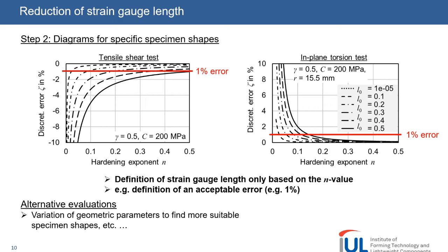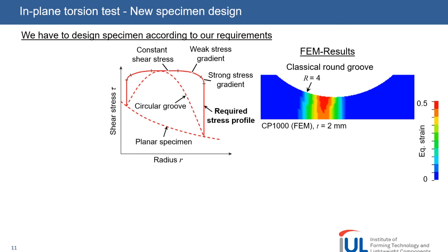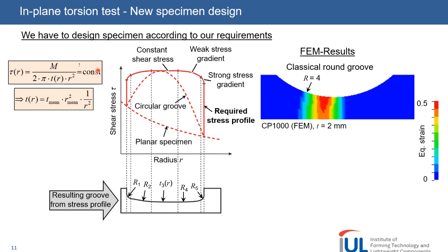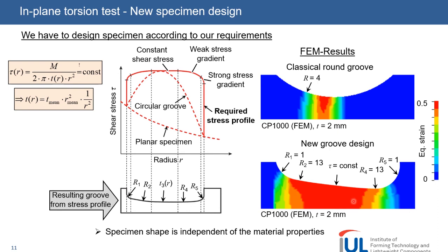This leads us to the second strategy to prevent strain localization. We designed a specimen which shows no strain localization. Conventional grooved in-plane torsion tests show localization at the root of the groove, where stress and strain is maximum as you can see for the CP1000. The new idea is to define the desired stress gradient along the radial position R and construct a grooved in-plane torsion specimen that fulfills the requirements. The required stress profile should have a wide range of constant shear stress. The local thickness is calculated from the equation of shear stress such that the shear stress is constant. The resulting grooved in-plane torsion specimen shows no localization of strain in the root of the groove, and as a bonus, this new specimen shape is independent of the material properties.